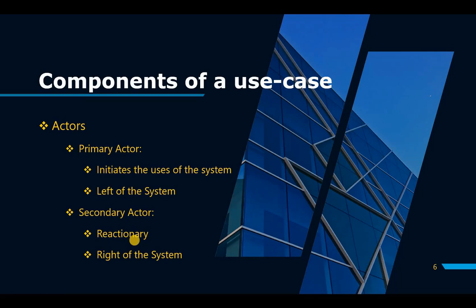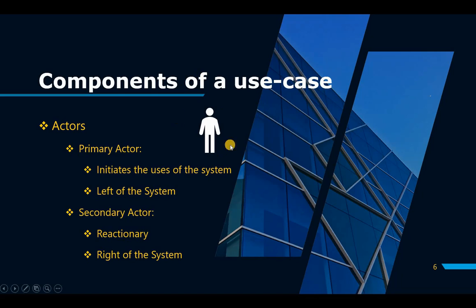An actor can be an external system, a person, or a business process — basically anything outside of your system that is interacting with your application. An actor is depicted by a human shape. Importantly, actors are never given specific names; they're always categorized. So if your application interacts with customers, you write 'customer' — not 'John the customer.' If it interacts with an administrator, you write 'administrator.'